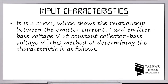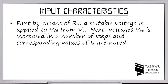Let's study the input characteristic. It is a curve which shows the relationship between the emitter current and emitter-base voltage VBE at constant collector-base voltage. To determine this, by means of R1 a suitable voltage is applied to VCB from VCC, then the voltage VBE is increased in a number of steps and the corresponding values of IE are noted.